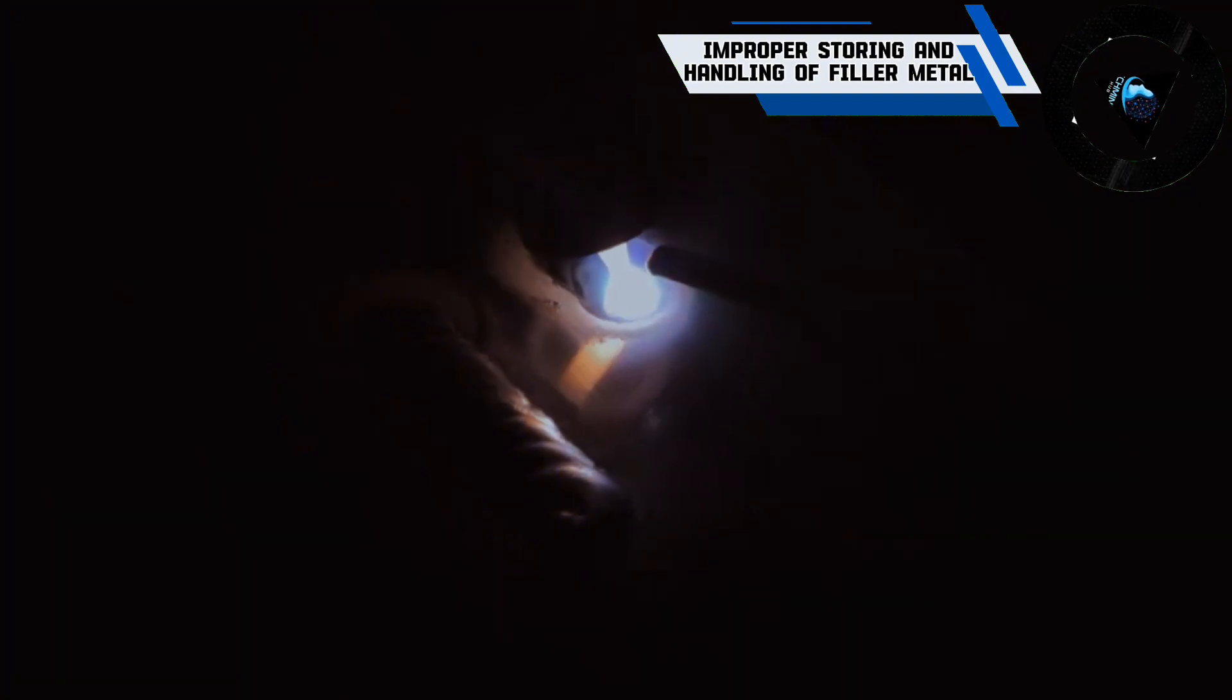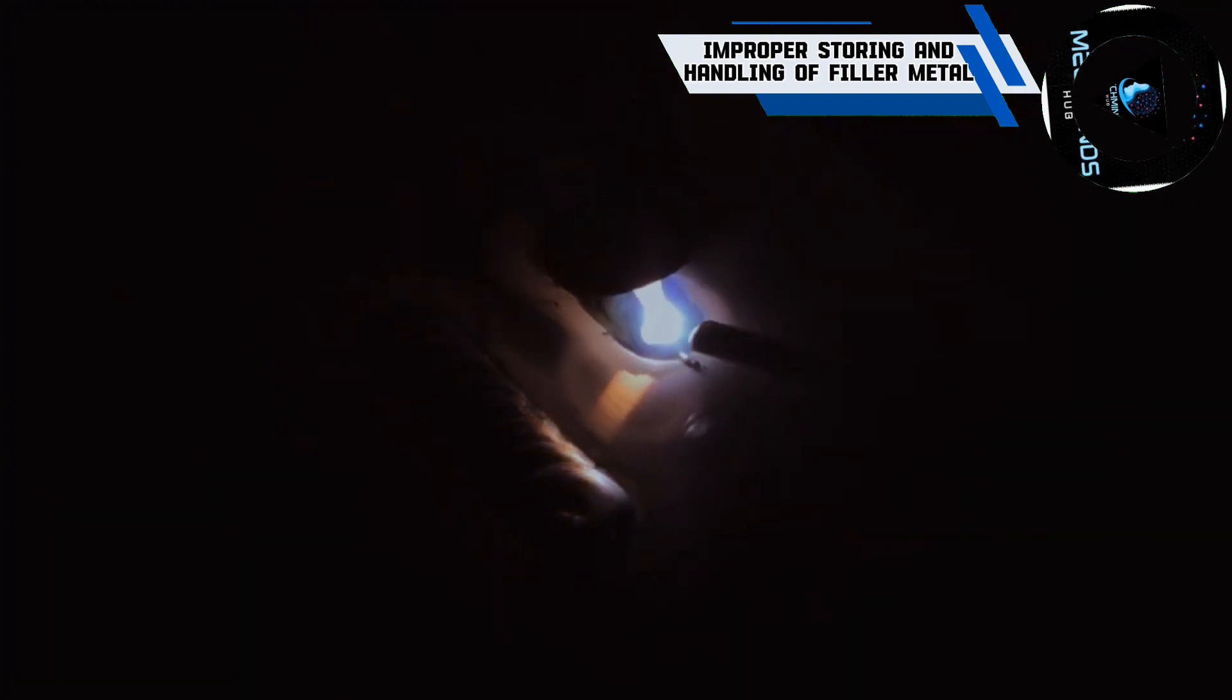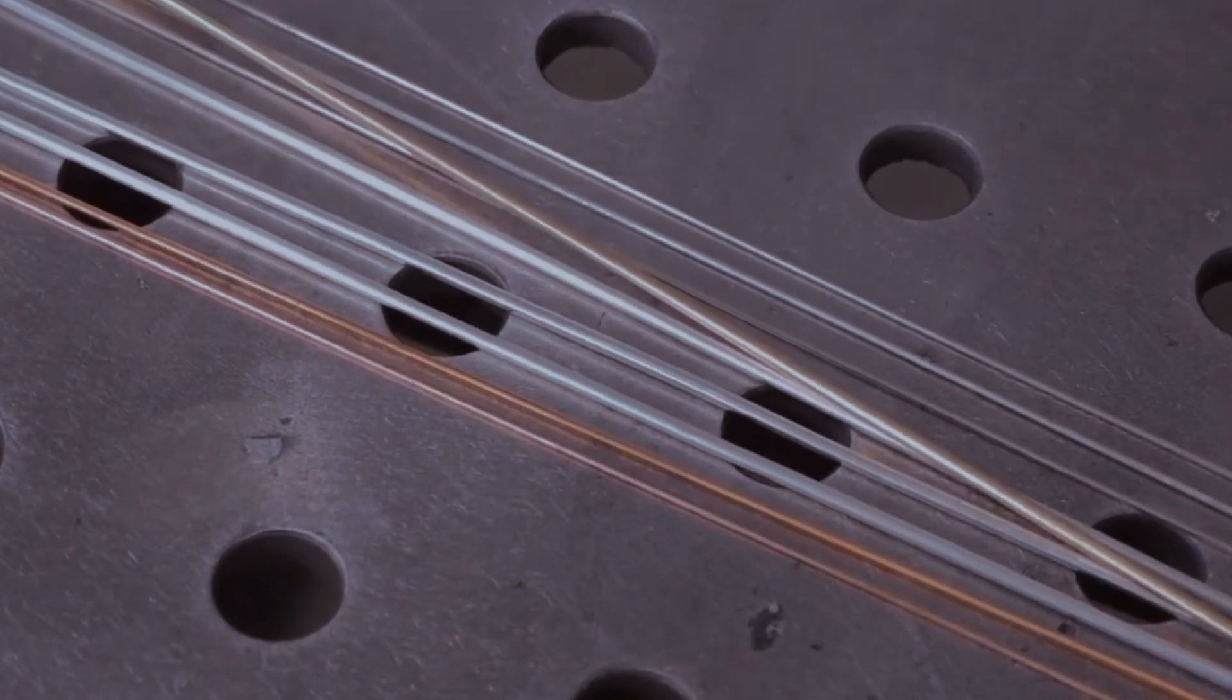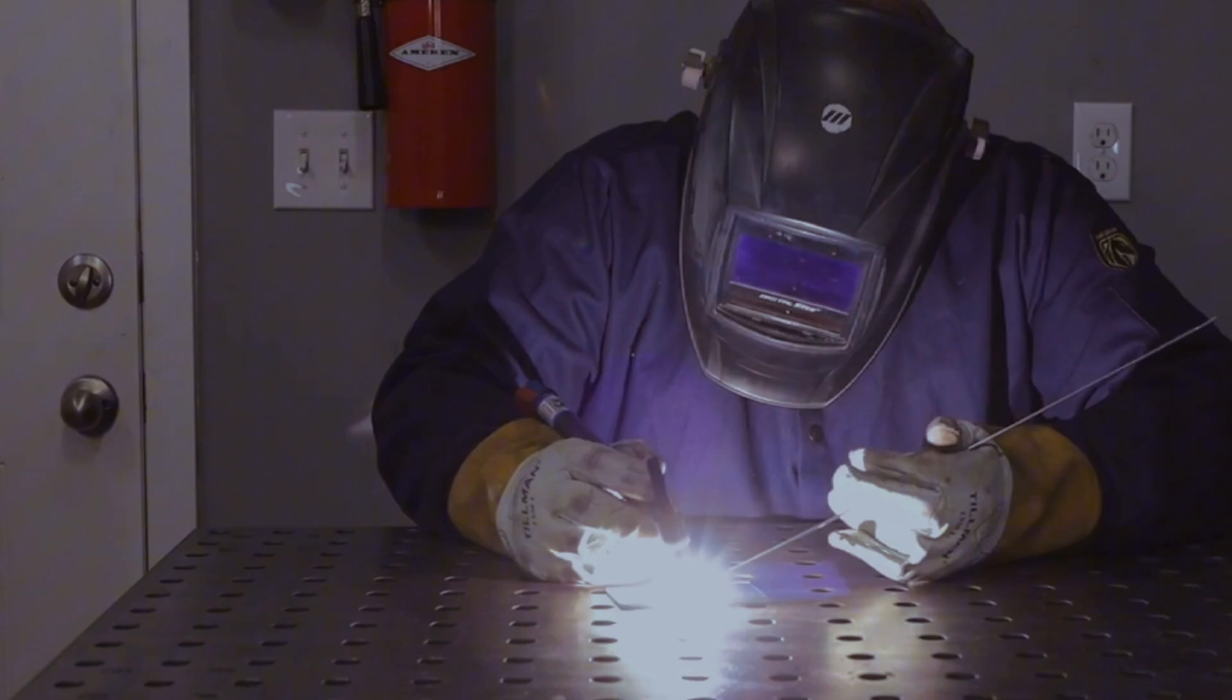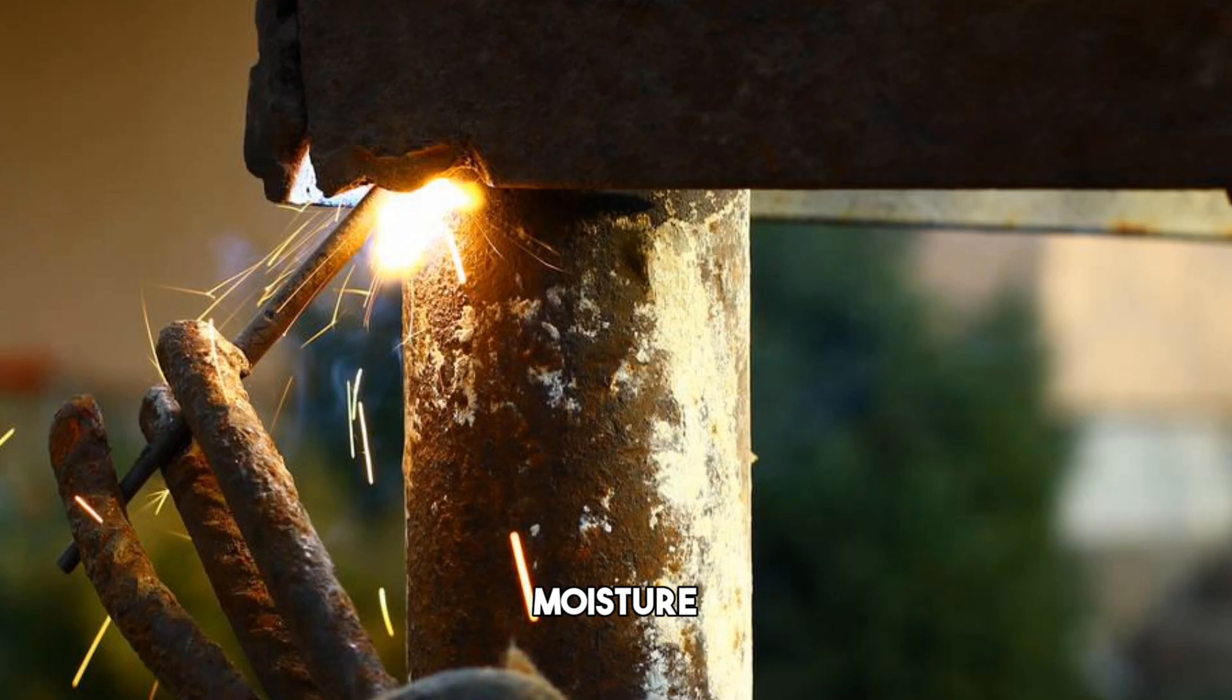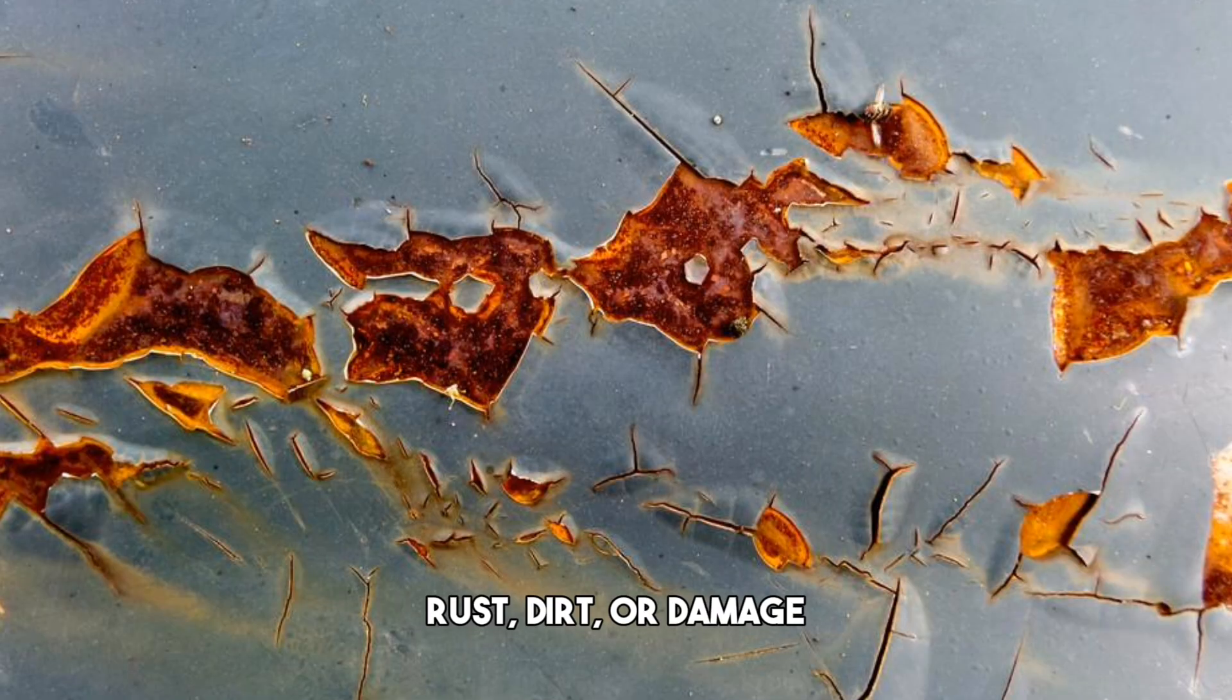Filler metal is the material that you add to the weld pool to fill the gap between the base metals. But if you don't store and handle your filler metal properly, you can affect its quality, performance, and shelf life. You can end up with problems like moisture, rust, dirt, or damage.